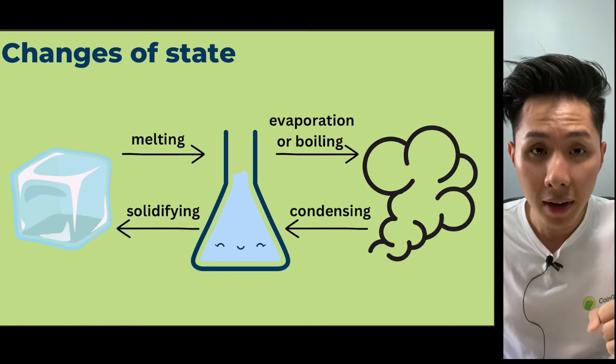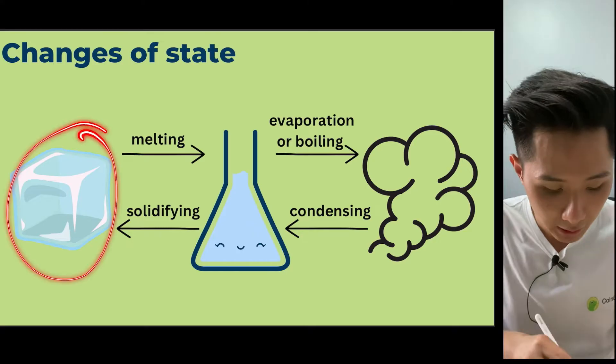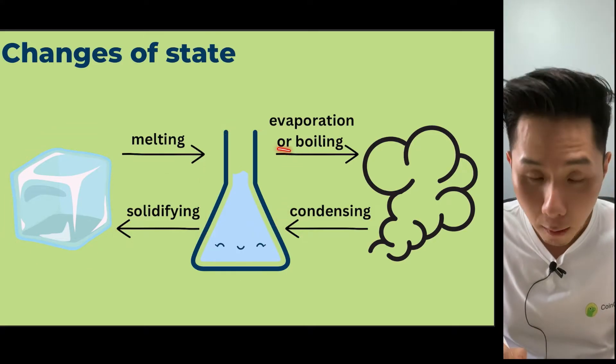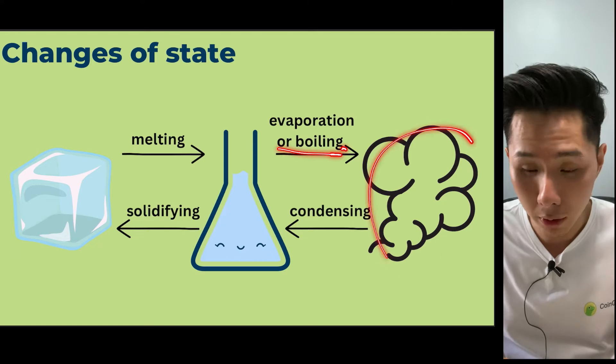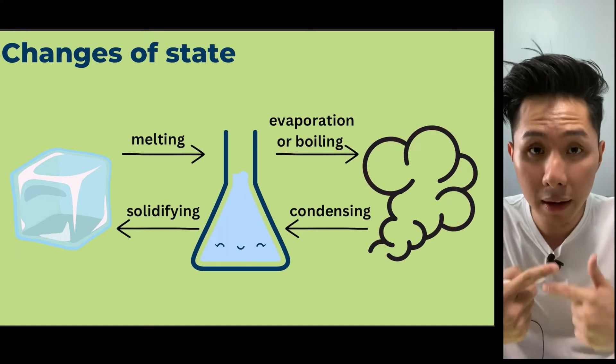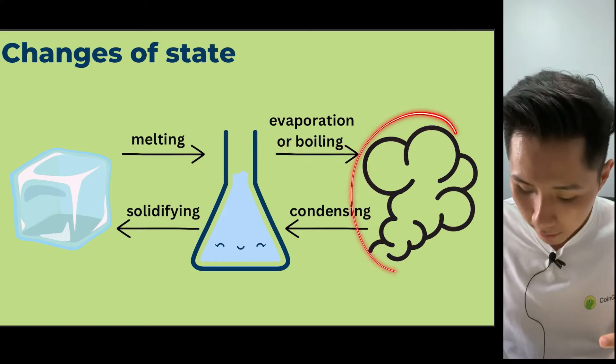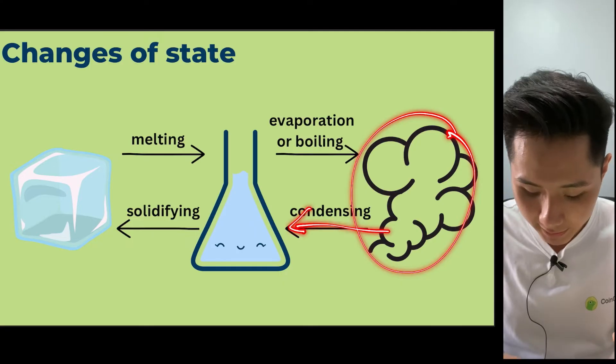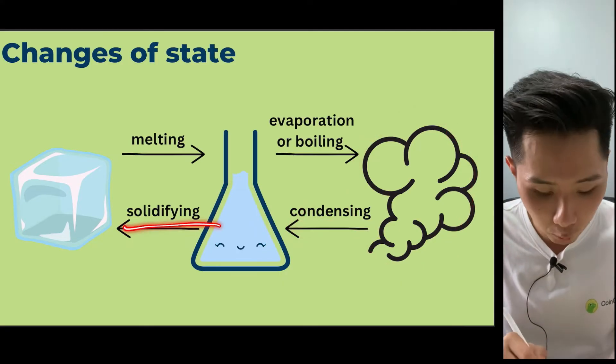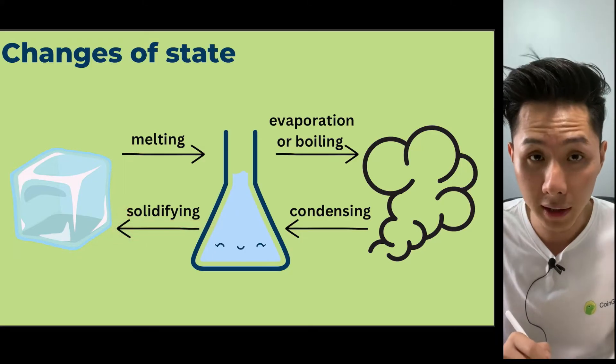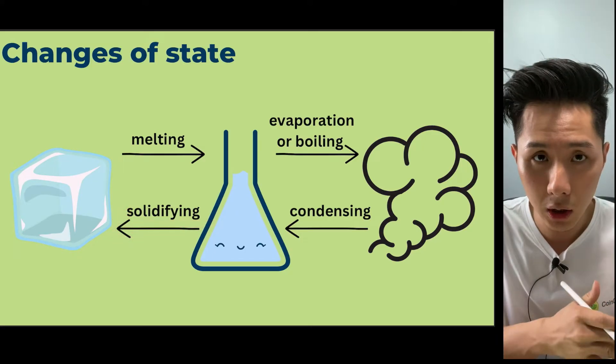So here are how different states will change. When solid melts, it becomes liquid. And when liquid evaporates or boils, it becomes gas. And you can reverse the entire process. When gas condenses, it becomes liquid. And when liquid undergoes a process called solidifying, it becomes a solid.